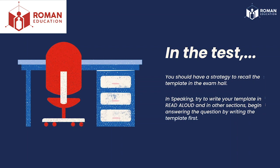For summarized written text, type the template first, then read the passage and get the important ideas, and insert them into the template. For essay writing, read the question, identify the question type — for example, agree/disagree — then start typing that template. Once the template is done, think about what you need to complete the gaps, taking help from the question. Always write the template first before thinking about how to complete it, because if you get stuck on ideas first, you might forget the rest of the template.